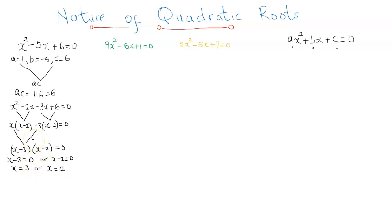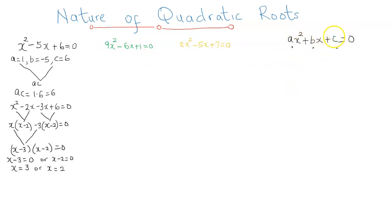Good. Now let's focus on the second equation. We're also going to use the factor method to solve this. Comparing the coefficients, we see that a is 9, b is negative 6, and c is positive 1.